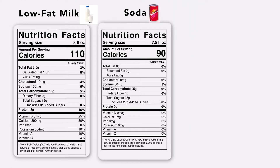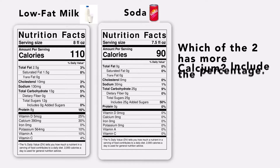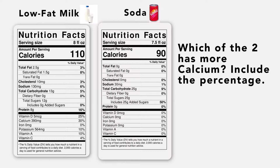These are two examples of labels. The one on the left shows a low fat milk label and the one on the right shows a soda label. Let's compare the amount of calcium these two drinks have. On your paper, write down which of the two has more calcium, including that percentage. You can pause this video to find the nutrient calcium and the amount of it.